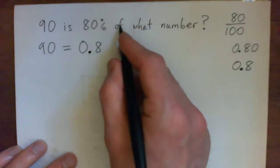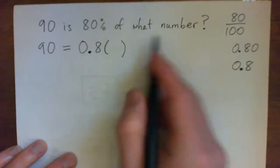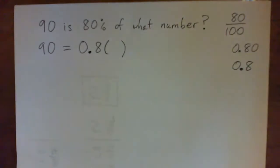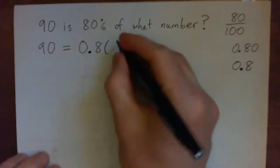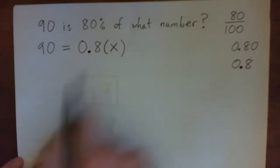So, of next. Of means multiply. Multiply by what number. And in place of what number, we can just give a letter. A, B, C, D, X, Y, Z, anything you want. So, let's just put X. So, we have 90 equals 0.8 times X.